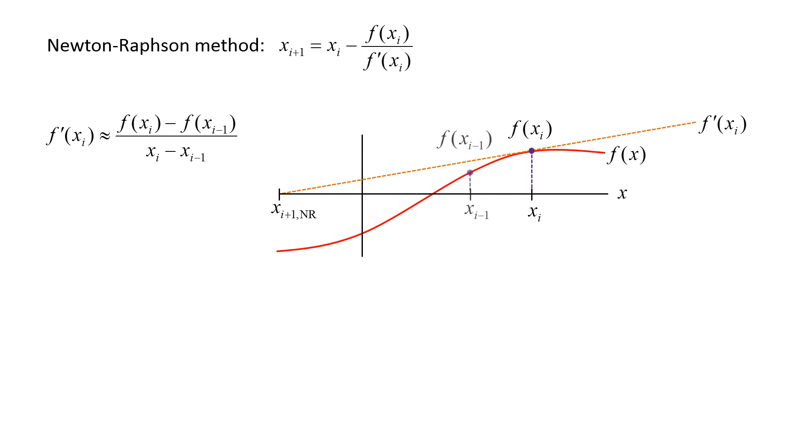xi minus 1, as well as the value of the function at that location, would be known from calculations at earlier steps. Graphically, the finite difference approximation represents the slope of a line passing through two points on a curve, which is also called a secant.